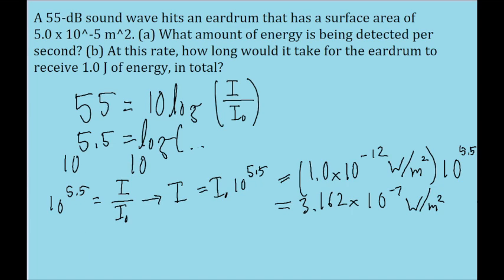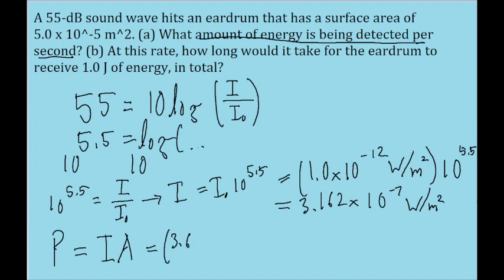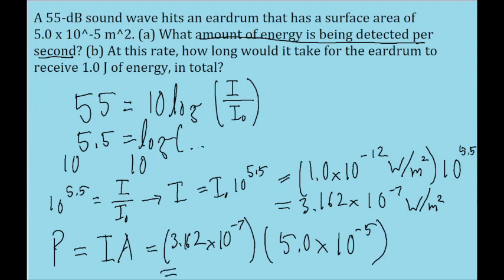But we want to find the amount of energy being detected per second. You might notice that this is basically the definition of power. There is a formula for the power of the sound wave — it's equal to the intensity of the wave times the area that is receiving it. So we'll multiply the intensity we just found by the area given to us in the problem, the surface area of the eardrum, which is 5.0 times 10 to the power of negative 5. If we put that into our calculator, we find a power of about 1.581 times 10 to the power of negative 11 watts.